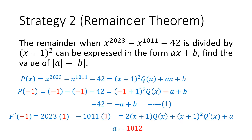So, a will be 2023 minus 1011, which is just 1012. Substituting this into equation 1, you'll be able to find b to be 970. Hence, the thing that we want to find, modulus of a plus modulus of b, is just 1012 plus 970, and our final answer will be 1982.